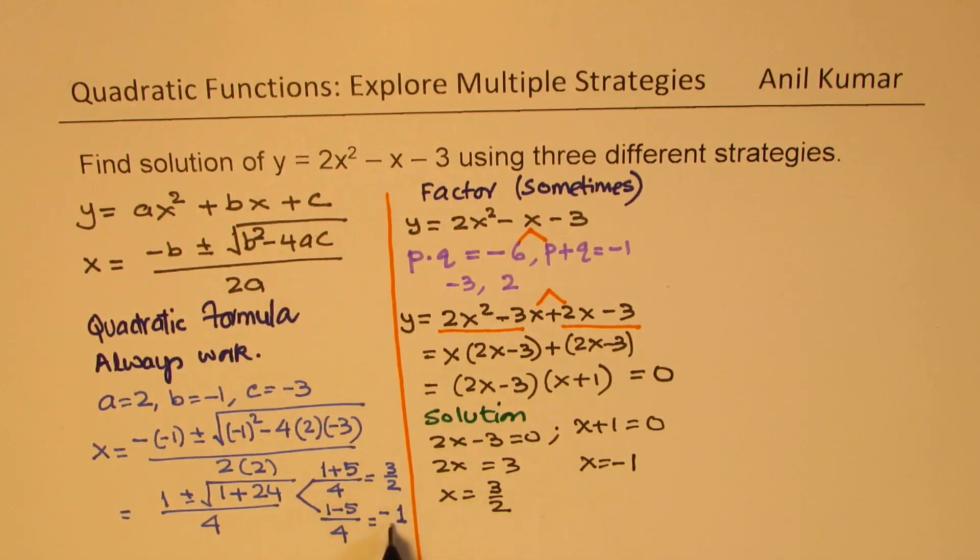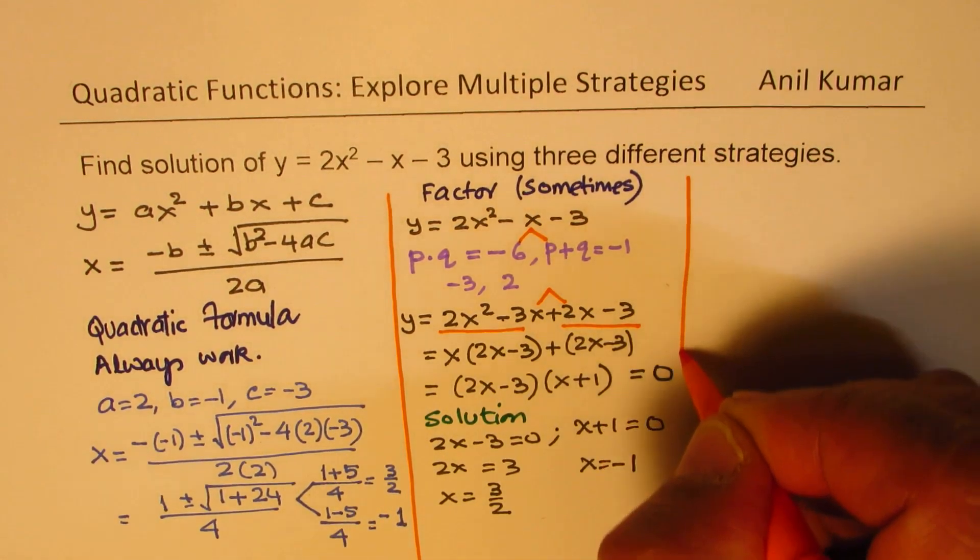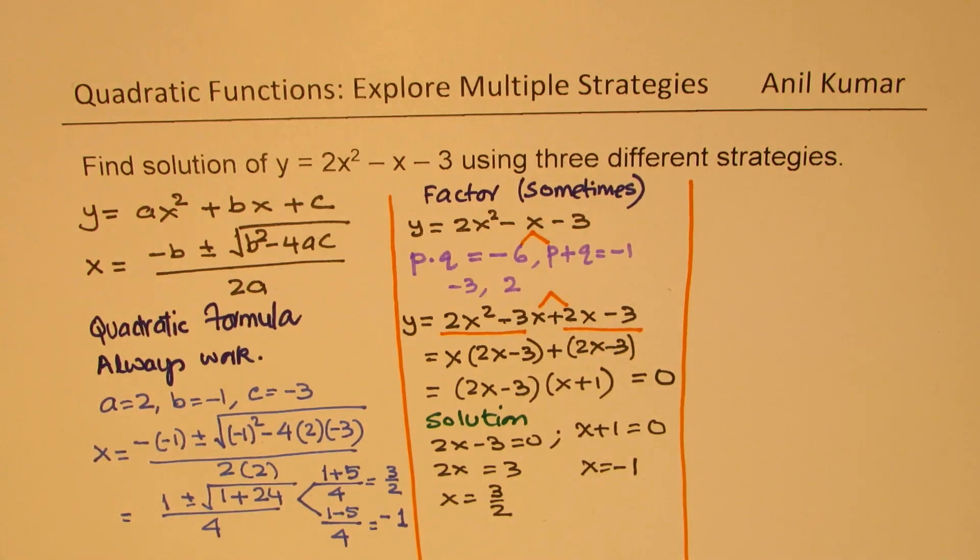So again, we got the same two solutions. Perfect. So this trinomial could be factored and therefore this method could be used. All right.